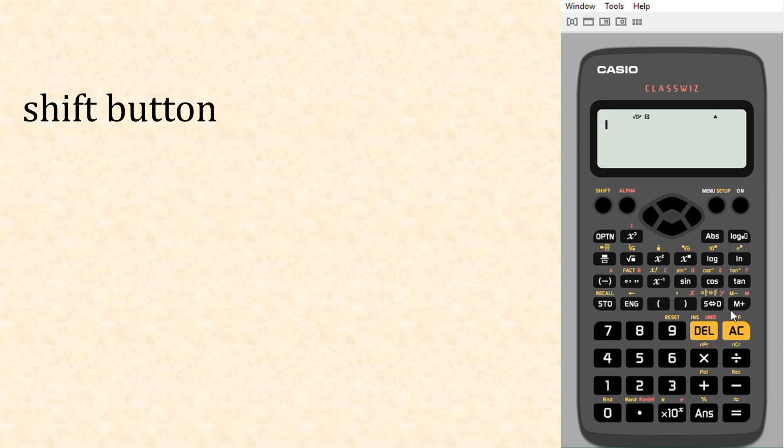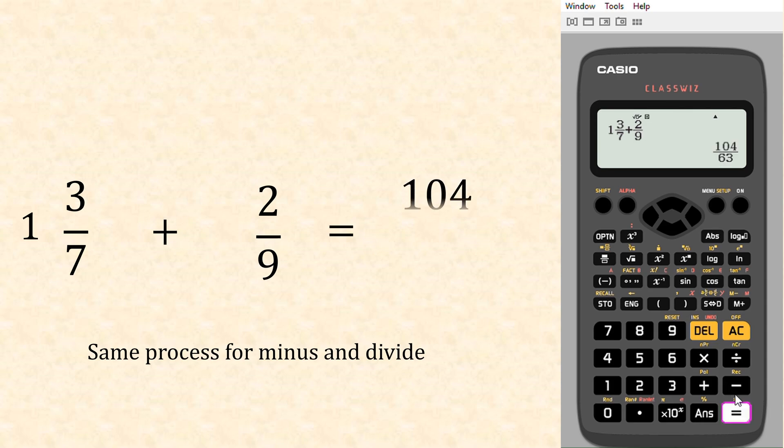Now if we were to do that again with a mixed fraction, we need to press the shift button then the fraction key so we can put in one, and then arrow up the top—let's have three over seven. Lovely. And mustn't forget to arrow across. So let's add this to two ninths. Fraction again, fraction button, two, and then nine at the bottom. Arrow across, click equals, and it gives us 104 over 63. So you can do any type of fraction calculation, just enter it in and arrow across.